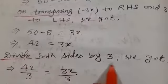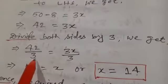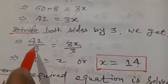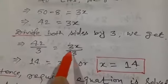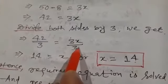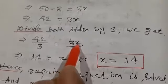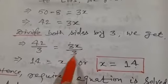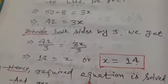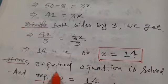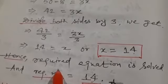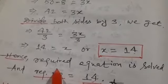So we have 50 − 8 = 3x, giving 42 = 3x. Dividing both sides by 3: 42/3 = 3x/3. Since 3 × 14 = 42, the 3s cancel and x = 14. Hence the required number is 14, and the solution of this equation is 14. Question number one is now completed.